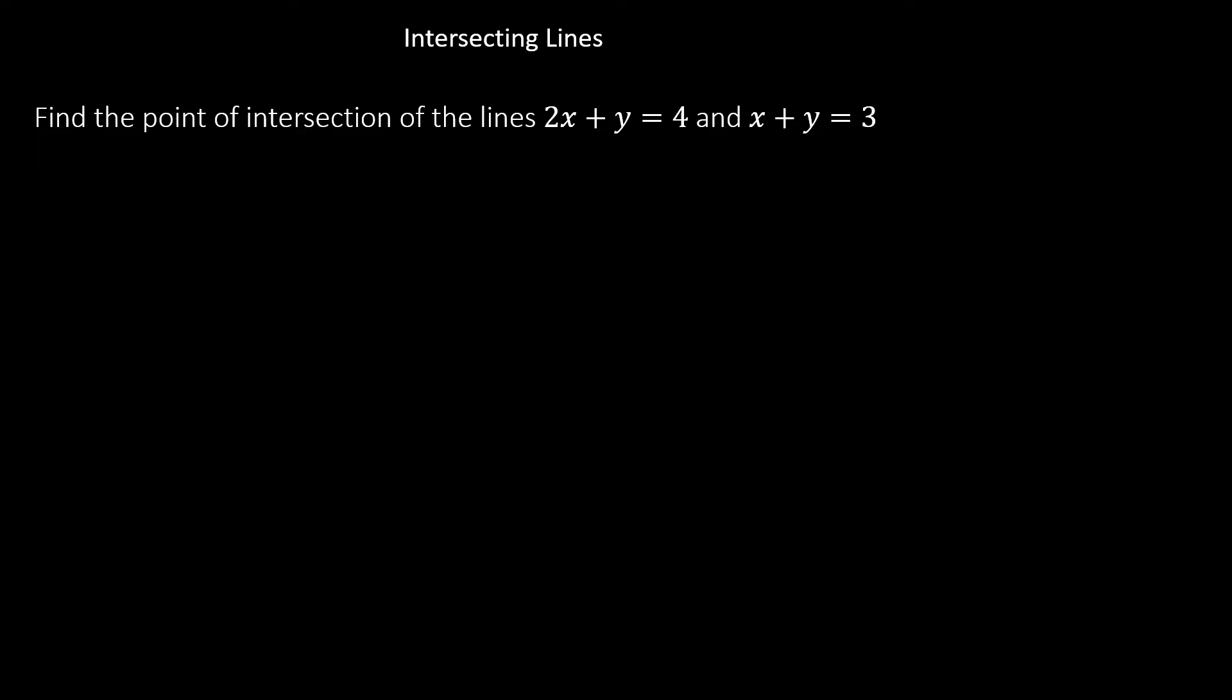Here we have a question which says find the point of intersection of the lines 2x plus y equals 4 and x plus y equals 3. What we have to do here is to solve the two equations simultaneously.